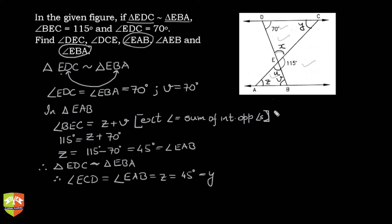So Y is also now known - Y is 45 degrees. What was Y by the way? Angle ECD, so we are done with ECD. Now X and U only have to be found out.